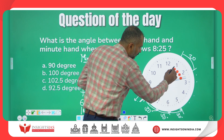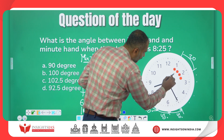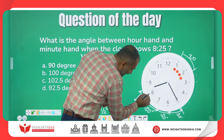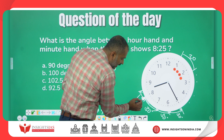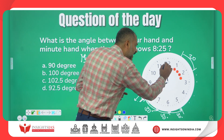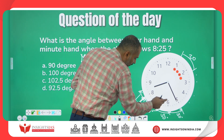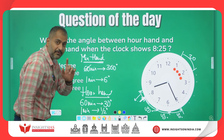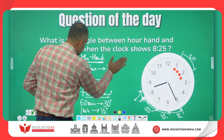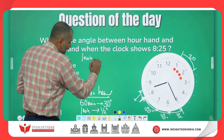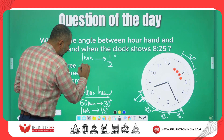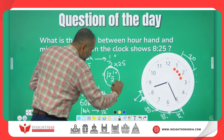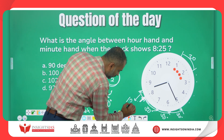The minute hand has started from 12 to 5, which is 25 minutes. In the same 25 minutes, the hour hand has also travelled from the 8 position to its current position. Since the hour hand covers half a degree per minute, in 25 minutes — cross multiplying — it will travel 12 and a half degrees. So this small angle is 12.5 degrees.